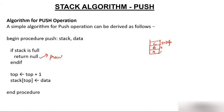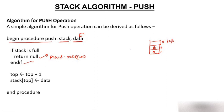If the stack is full, return null or print overflow. If the stack is not full, increment top to top plus one — so if the current top is 2, it becomes 3, pointing to the empty position — then assign the data to that position in the stack array: stack[top] = data. So the push algorithm has only three steps: check for overflow, increment top, and insert the data.